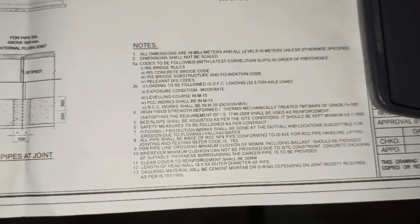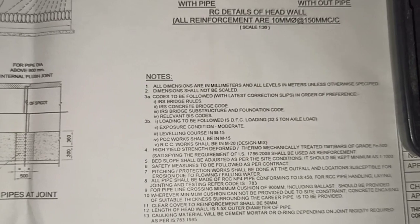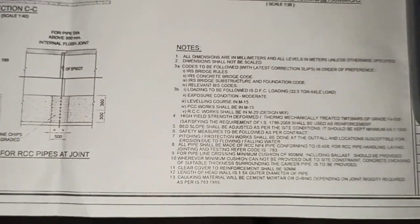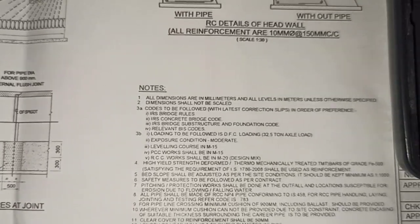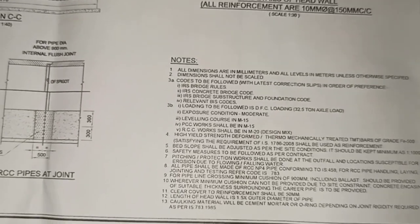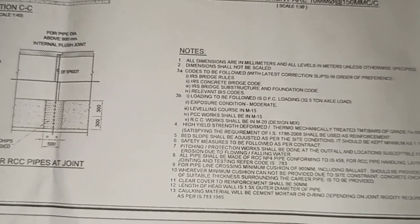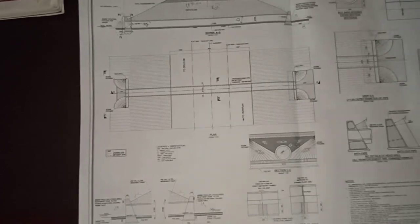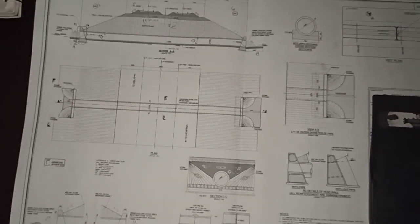Finally, there are notes regarding the drawing. These notes mention the standards followed in preparation of the drawings — all dimensions are in millimeters, and the codes followed for preparation of these GADs and designs are mentioned here. This is how a general arrangement drawing of a pipe culvert is prepared — this is the standard format.